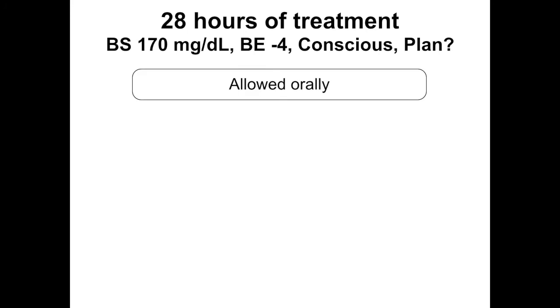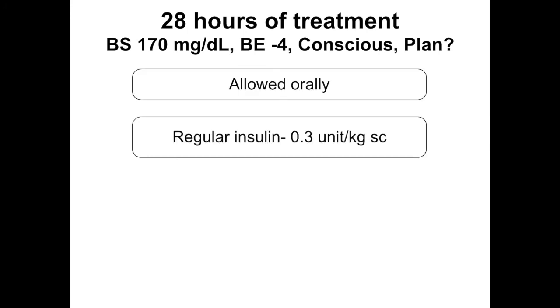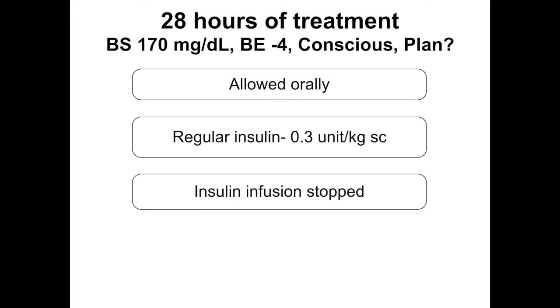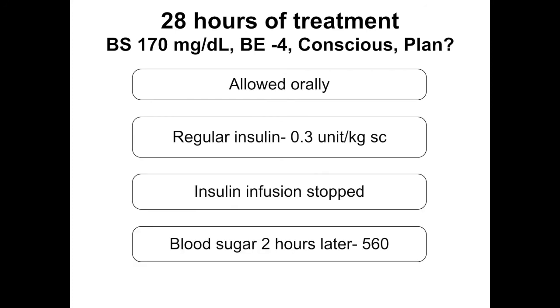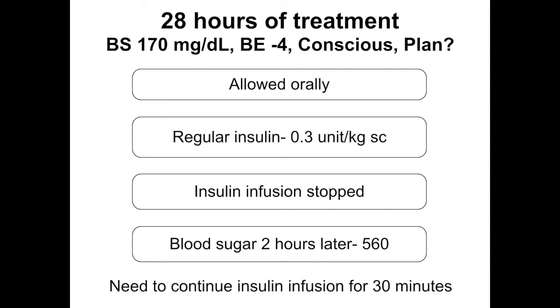At 28 hours, blood sugar is 170, base excess is normal, and the child is conscious. Regular insulin 0.3 units was given subcutaneously and the insulin infusion was stopped — but 2 hours later, blood sugar was 560 again. The problem: no overlap was given between subcutaneous and IV insulin. There must be a minimum 1-hour gap between giving subcutaneous insulin and stopping IV insulin. Ideally, give long-acting insulin a few hours beforehand for better coverage.